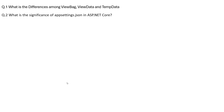What is the significance of the appsettings.json file in ASP.NET Core? The appsettings file is a configuration file where we transfer data securely. There are many more questions covered in the PowerPoint presentation.